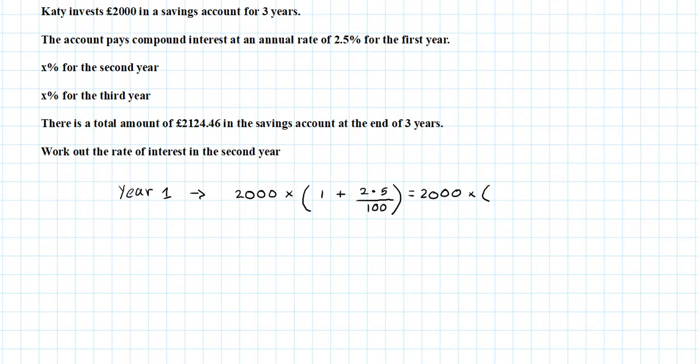Which can also be written as £2000 times 1.025, and that's going to give me the amount at the end of the first year, which is £2050.